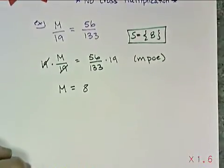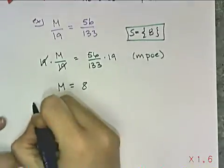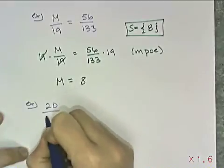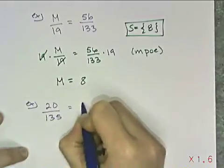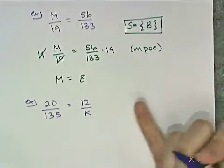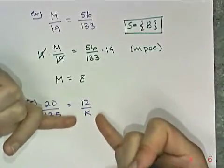Now, I can make this a little bit different and make you think about what you have to do to solve it. So I have 20 over 135 equals 12 over k. And so I have a proportion, but my unknown is in the denominator.